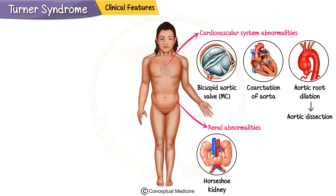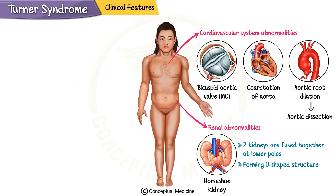Renal abnormalities are also a common feature. Many patients have a horseshoe kidney, meaning the two kidneys are fused together at the lower poles, forming a U-shaped structure. Although this doesn't always cause symptoms, it may predispose patients to infections or other urinary problems.